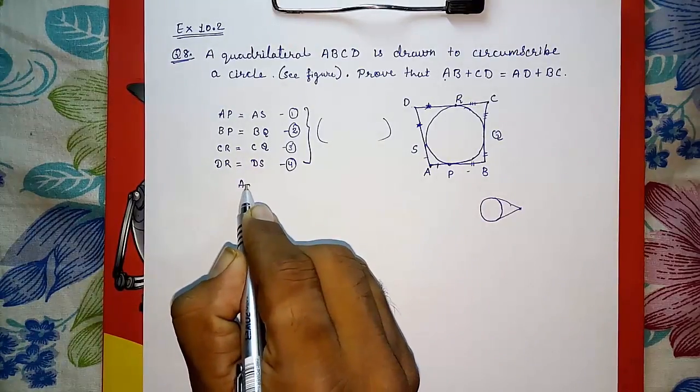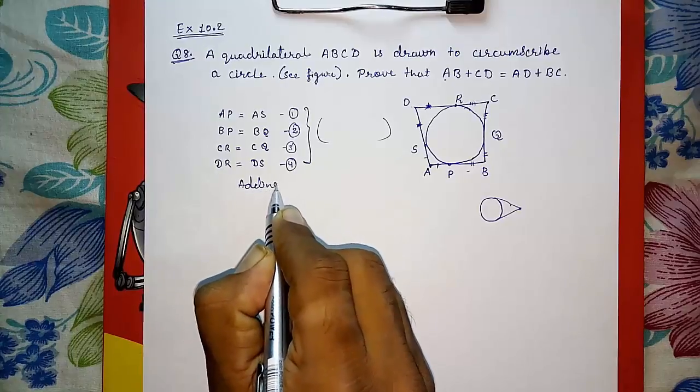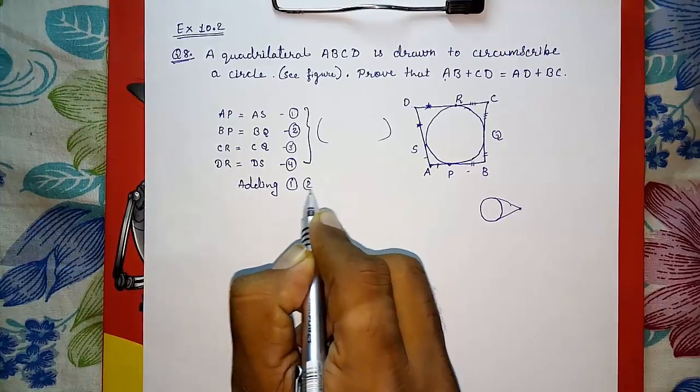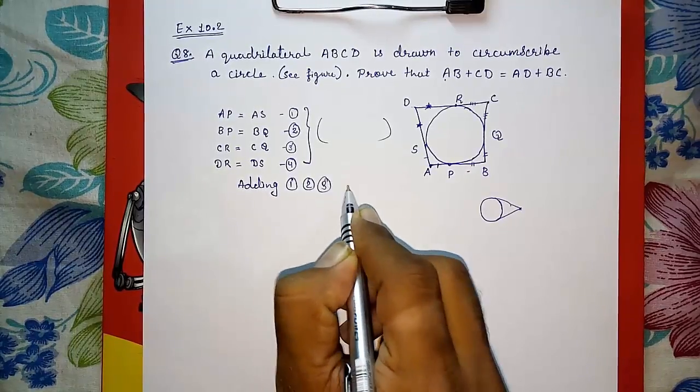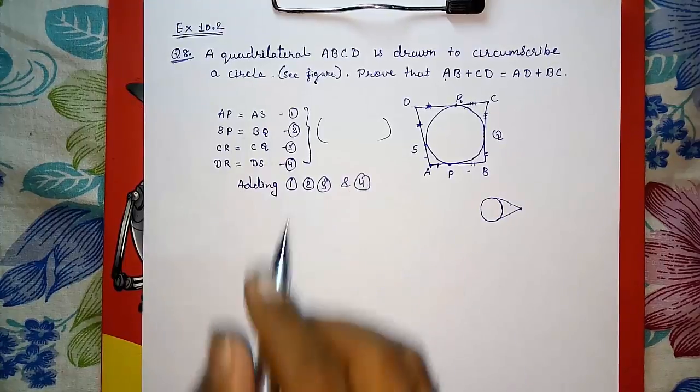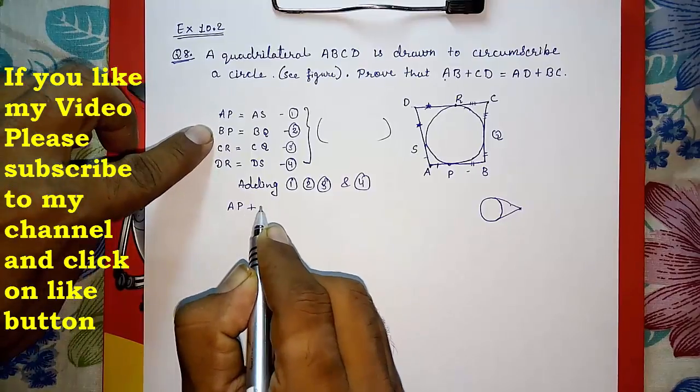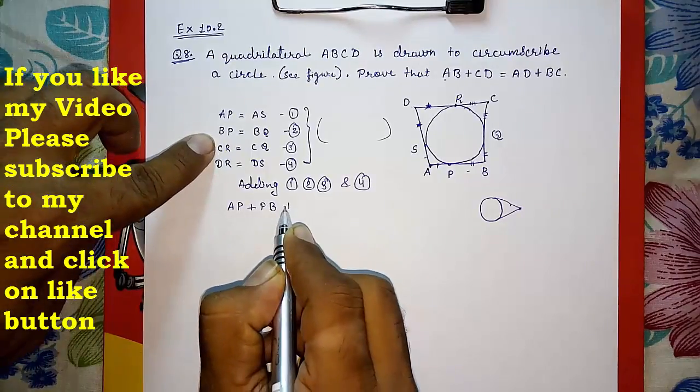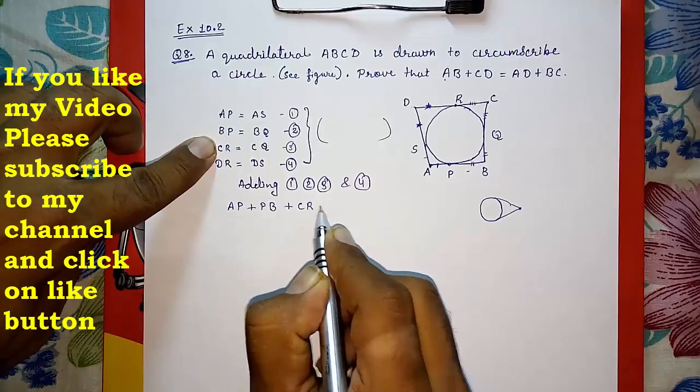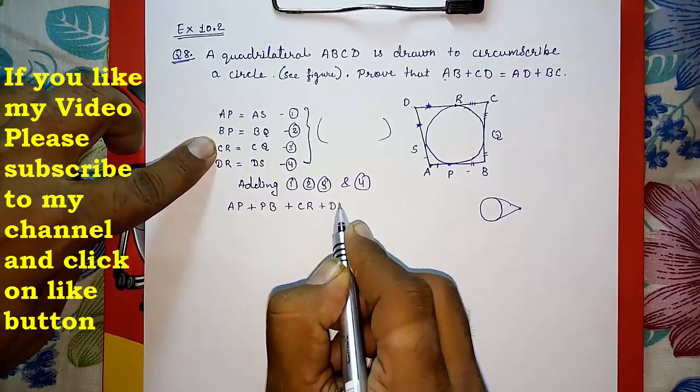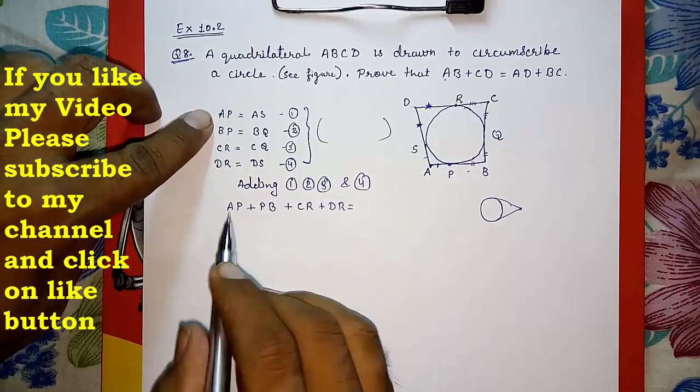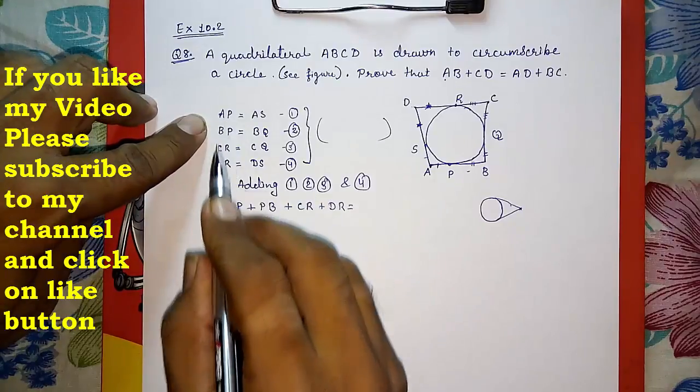Now adding results 1, 2, 3, and 4. We have to add this. I am going to add AP plus PB plus CR plus DR. Now here I have taken them in order, so no need of arranging this. But on the other side we have to arrange it.